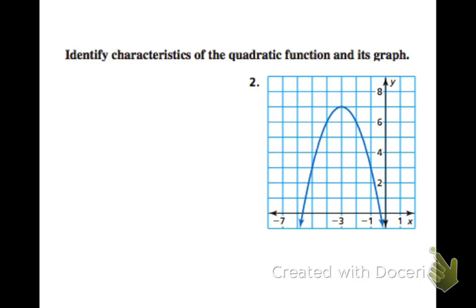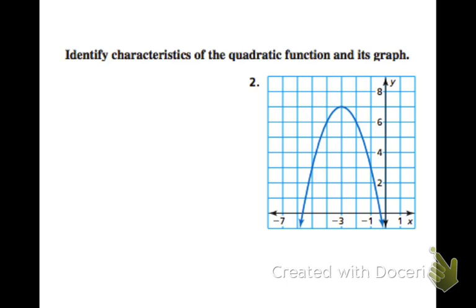So let's try one on our own. So here is a parabola that opens down. We can start by identifying the vertex right here. Okay, so the vertex is equal to negative 3, comma 7.